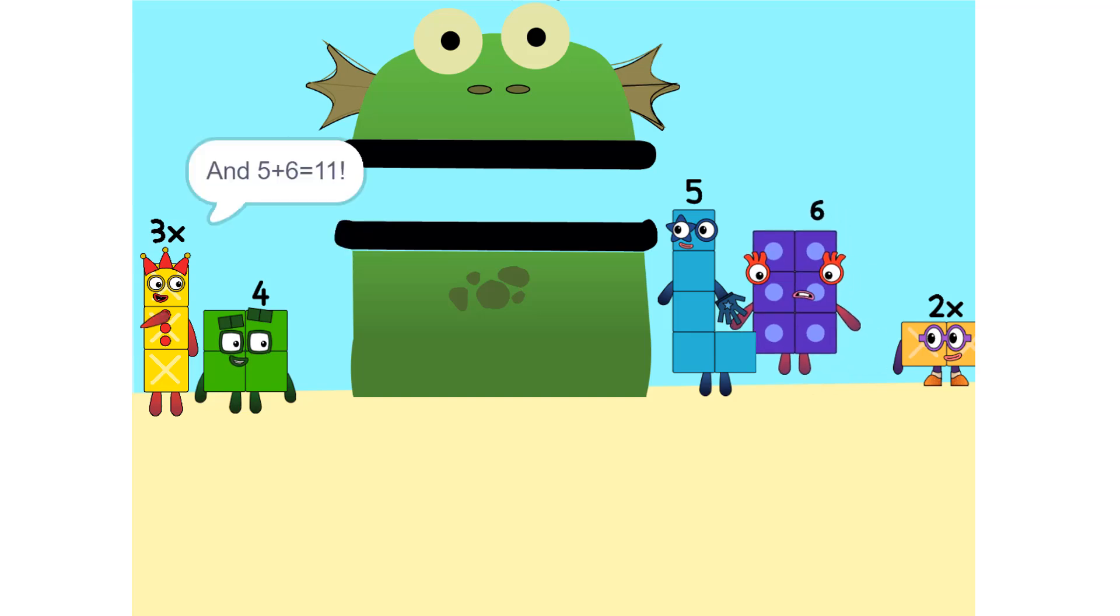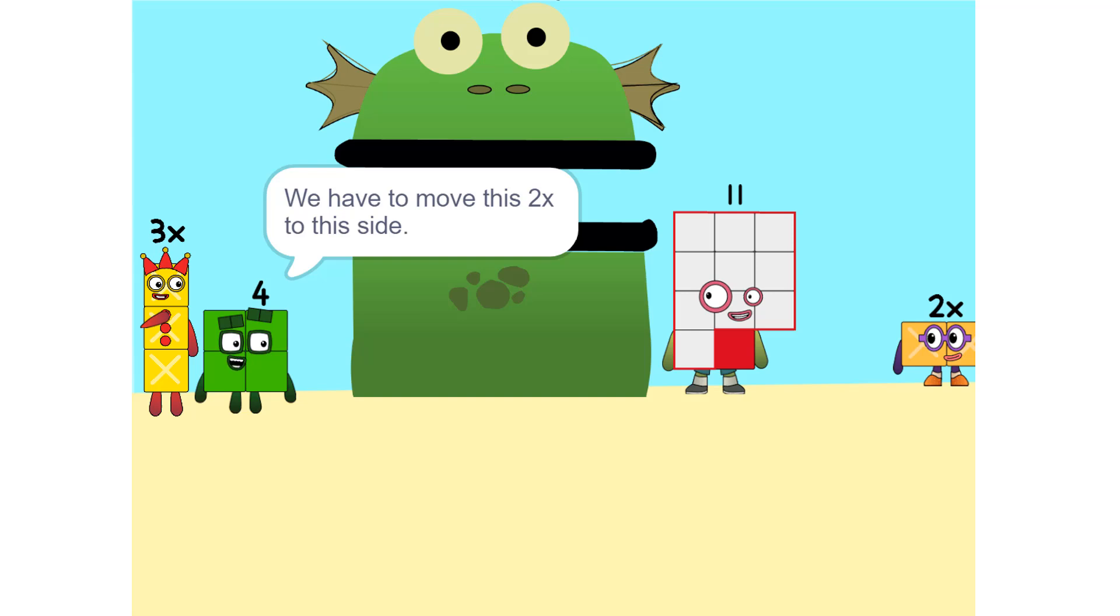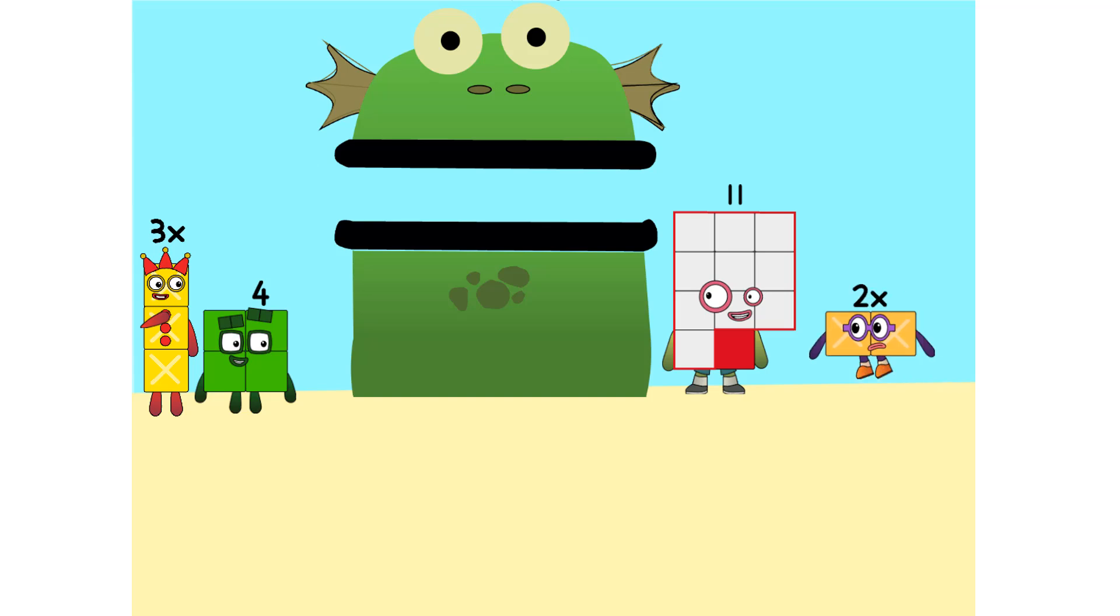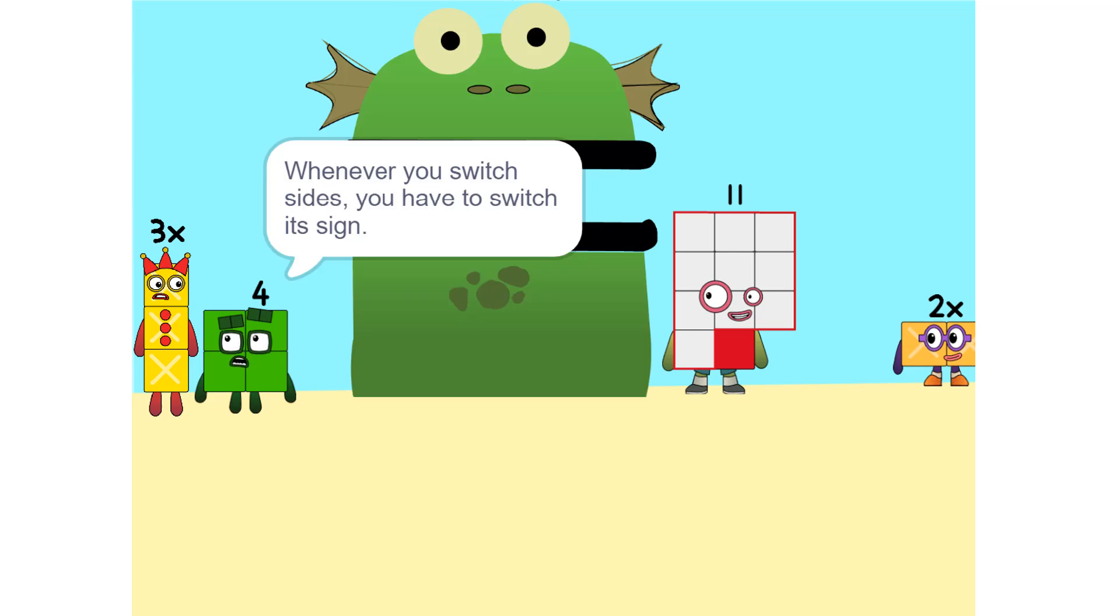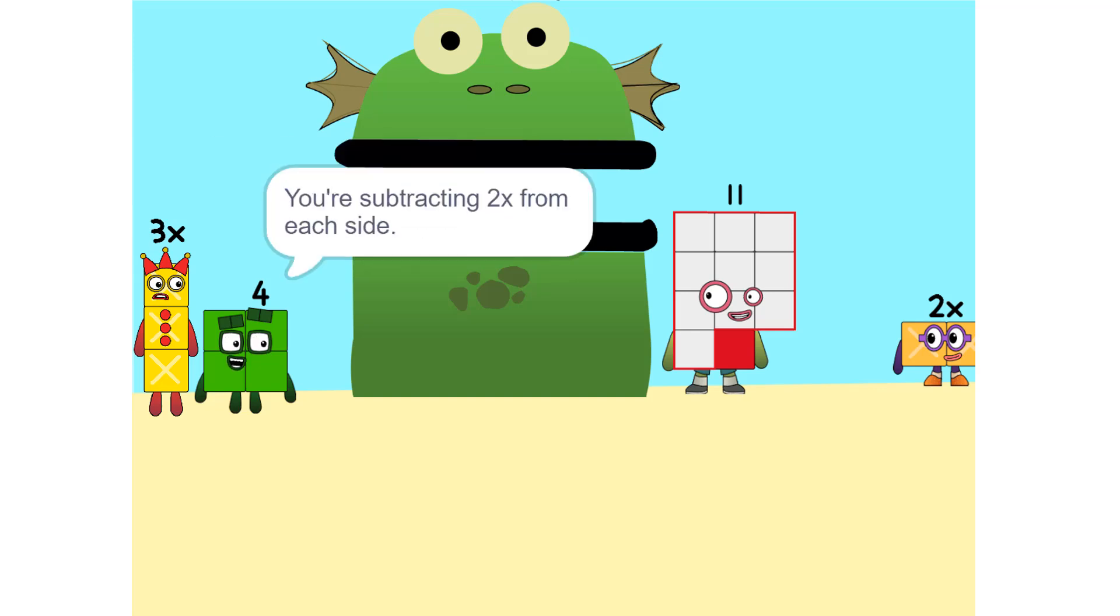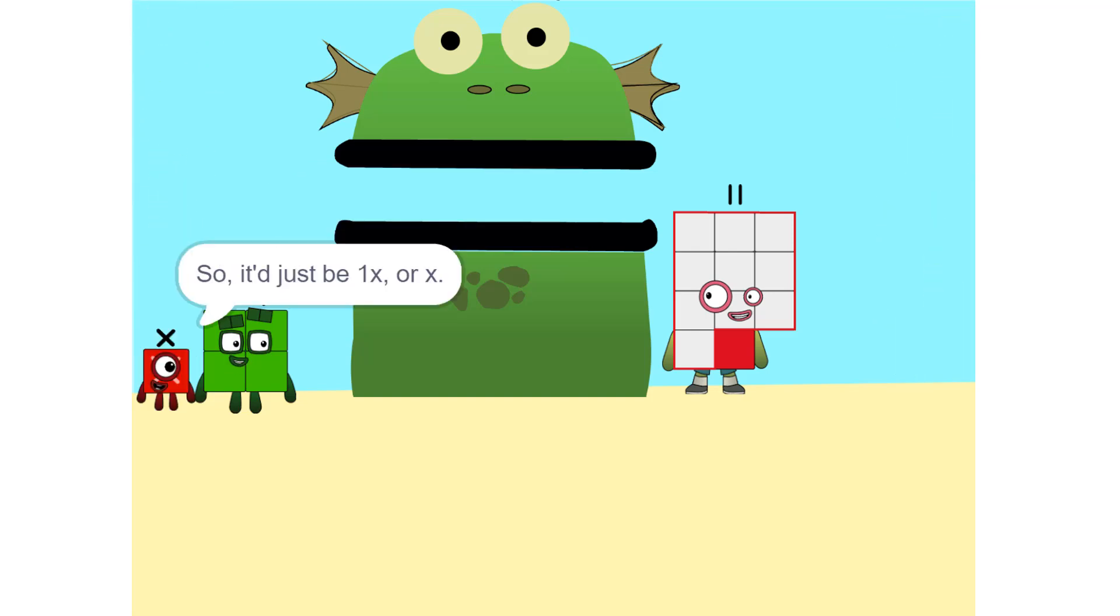And the final thing is 6 to 11. Yeah, now we have to move things around. We have to move this 2X to this side. So, 5X. So whenever you switch sides, you have to switch its sign. If it's positive, it becomes negative and vice versa. Why? Think of it this way. You're subtracting 2X from each side. So it'll just be 1X or X. Correct.